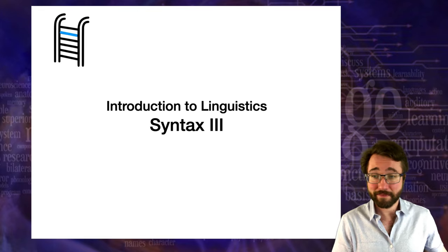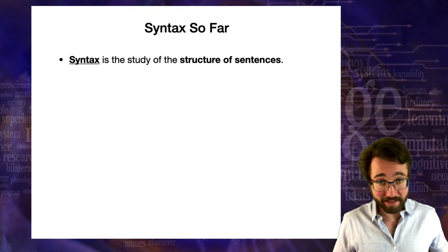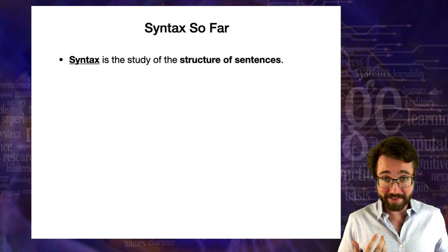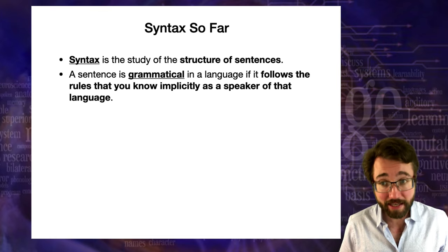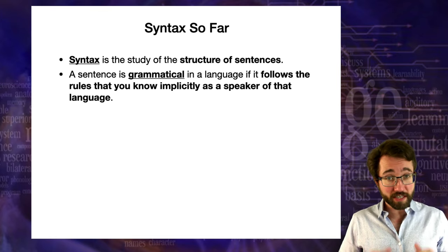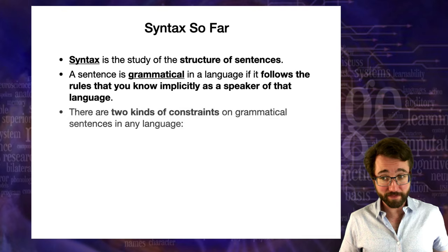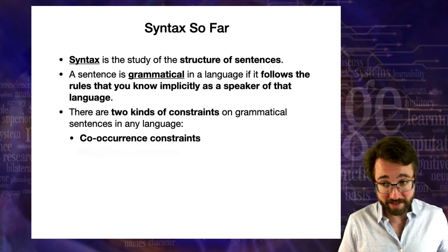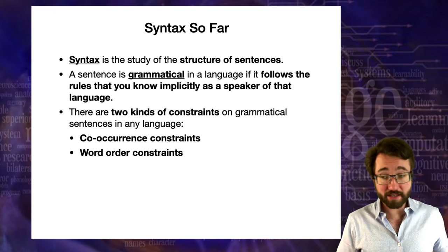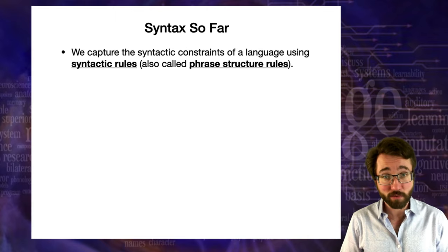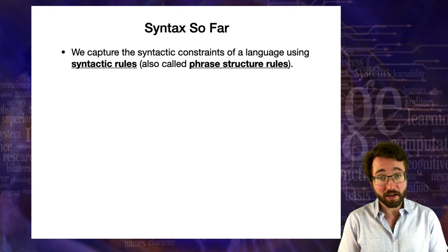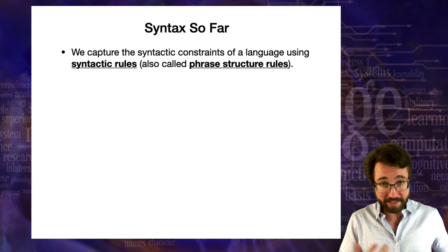Remember that syntax is the study of the structure of sentences — how words combine together to form phrases and sentences. A sentence is grammatical if it follows the rules that you know implicitly as a native speaker of a language. There are two kinds of constraints: co-occurrence constraints and word order constraints. These two kinds of constraints are summarized in syntactic rules, which are also called phrase structure rules.